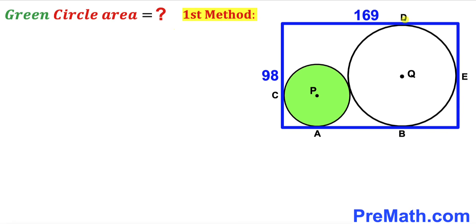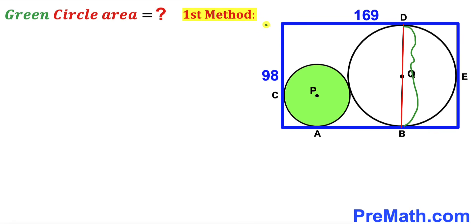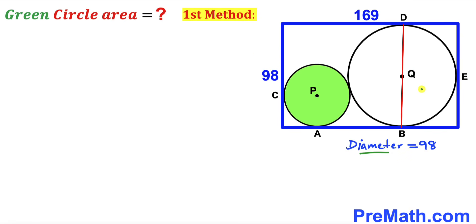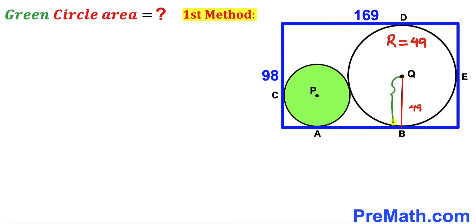In this next step I'm going to connect the points of tangency D and B. We can see that BD is the diameter of the larger circle, and this diameter length is equal to the width, which is 98 units. So the diameter of the larger circle is 98, and therefore the radius — which I'll label uppercase R — is equal to 49.